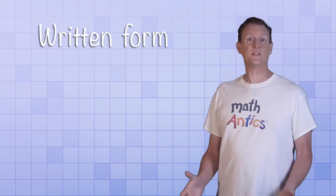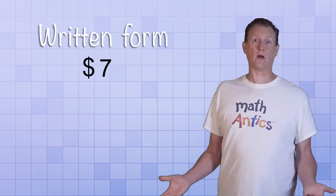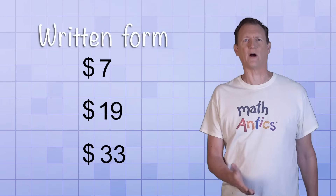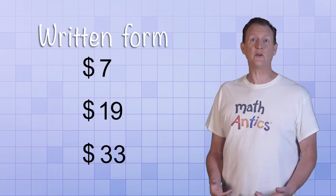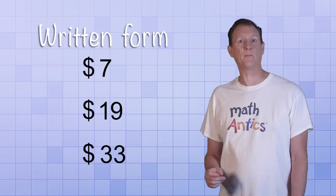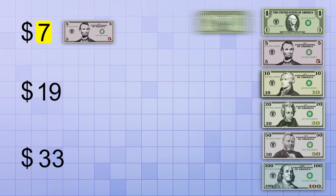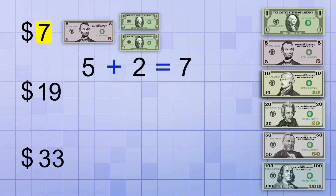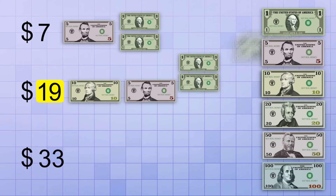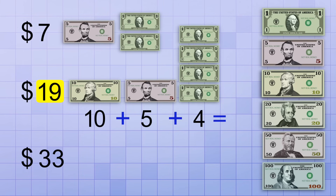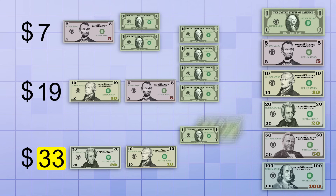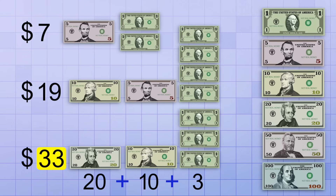In written form, you can represent any amount of money simply by using numbers — seven dollars, nineteen dollars, thirty-three dollars, and so on. But when it comes to physical currency, you need to use different combinations of the bills that are available. For example, there isn't a seven dollar bill, but you could represent seven dollars using one five dollar bill and two one dollar bills, because five plus two equals seven. You could represent nineteen dollars using one ten, one five, and four ones, because ten plus five plus four equals nineteen. And you could represent thirty-three dollars using one twenty, one ten, and three ones, because twenty plus ten plus three equals thirty-three.